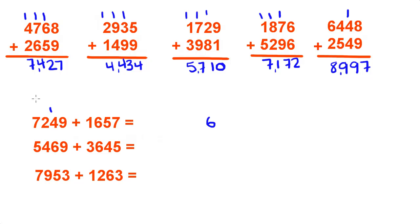5 and 4 is 9 plus 1 is 10. Place holder is 0. Carry over the 1. 6, 7, 8 plus 1 is 9. And 7 plus 1 is 8. That's 8,906.